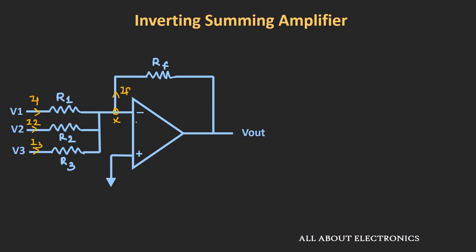In the earlier video on the inverting op-amp configuration, we covered the concept of virtual ground. Whenever negative feedback is applied to an op-amp, a virtual short exists between the inverting and non-inverting terminals. So if one terminal is at ground potential, the other is also effectively at ground potential — this node X will be at zero potential. Now let's apply KCL at node X: I1 + I2 + I3 = IF.